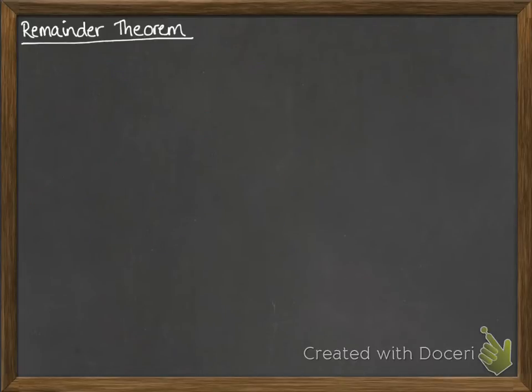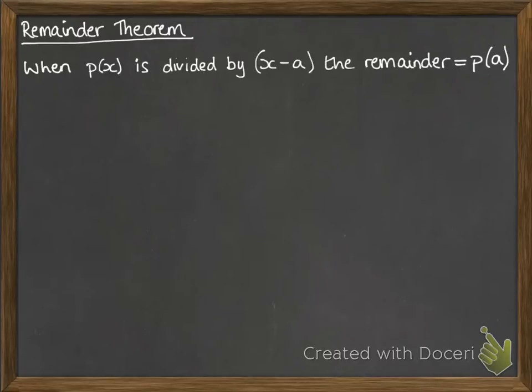Let's have a look at the Remainder Theorem, which is the cousin to the Factor Theorem. When a polynomial is divided by x minus a, the remainder is equal to p(a). So this follows on from what we just saw. When the remainder is 0, then it is a factor.